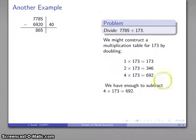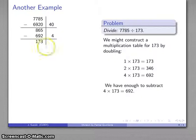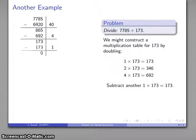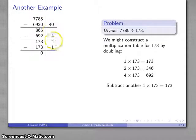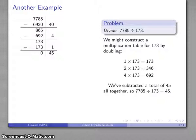I definitely have enough to subtract 692. So let's do that. I have enough to subtract 173 one more time. And altogether, I have subtracted 40, 44, 45 173's. And so there's my quotient.